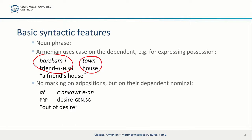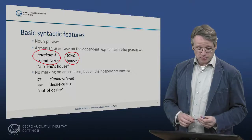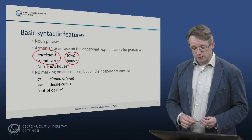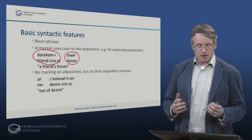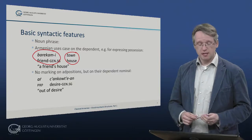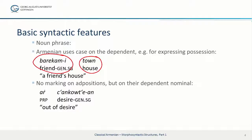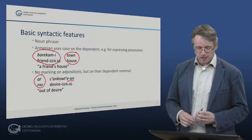There is no marking on adpositions but on their dependent nominals. So we have ar zankutian, for example, out of desire, with a preposition ar that we will come back to later in this session, and then the noun zankutian marked for genitive singular. So here with the genitive singular ending and the whole phrase means out of desire.